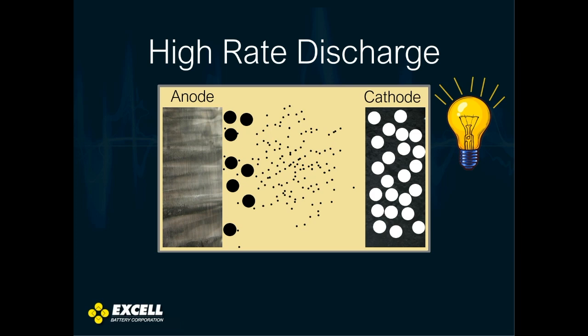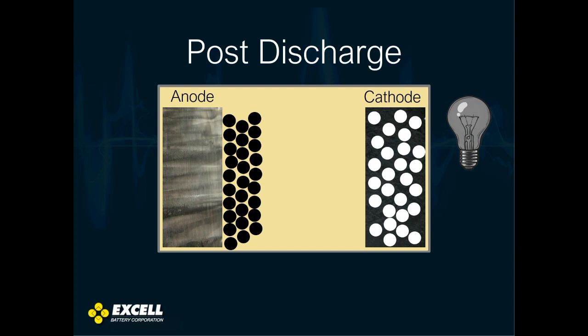Once the light bulb is turned off and no more current is applied, the lithium chloride passivation layer forms again. But because it was broken up before, there's more surface area for more reaction to take place, so it actually forms thicker. People see this by noticing more passivation with a used battery than a brand new battery.